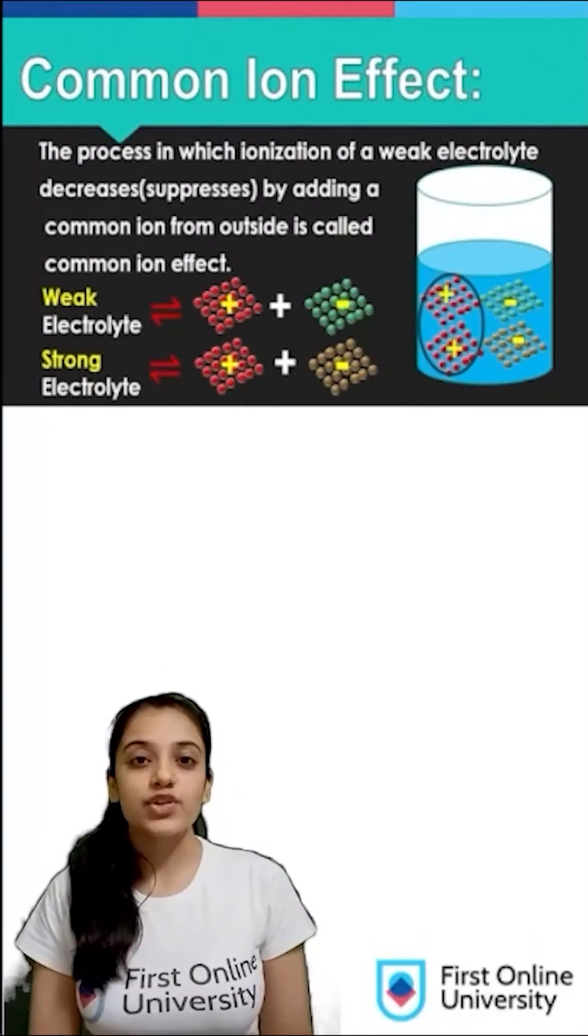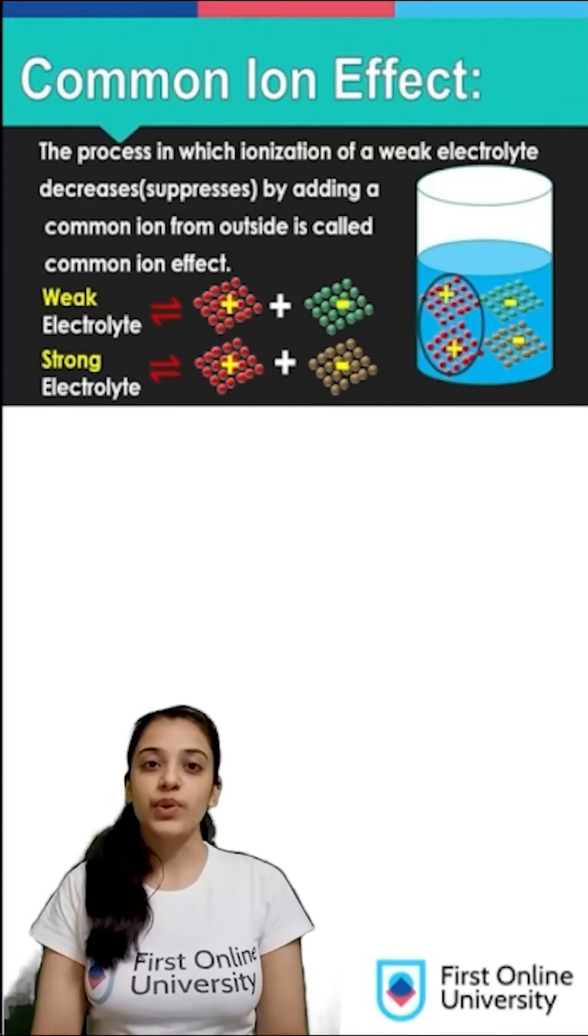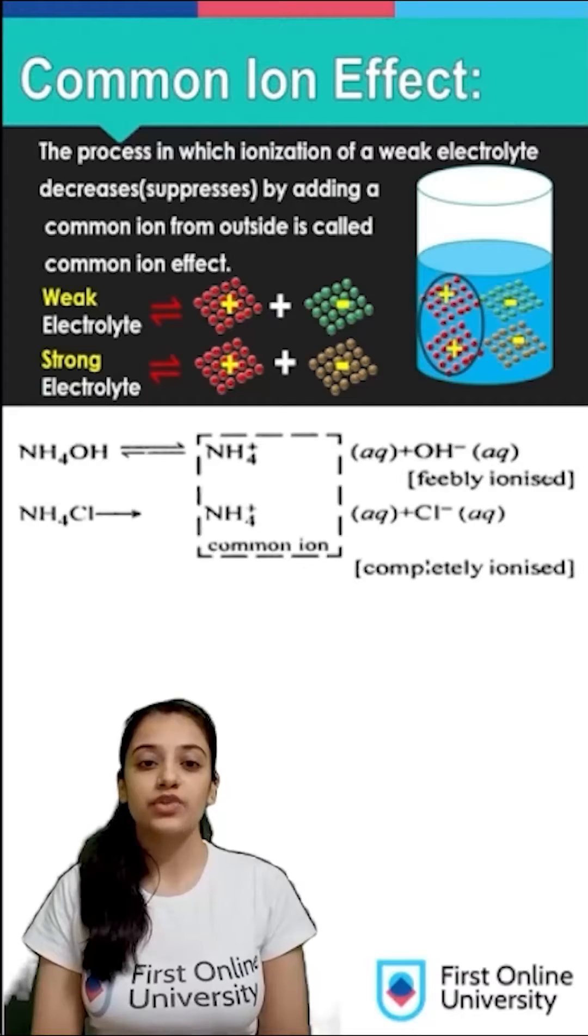If we have a weak electrolyte and a strong electrolyte, the presence of a common ion between the two is going to suppress the ionization of the weak electrolyte further.